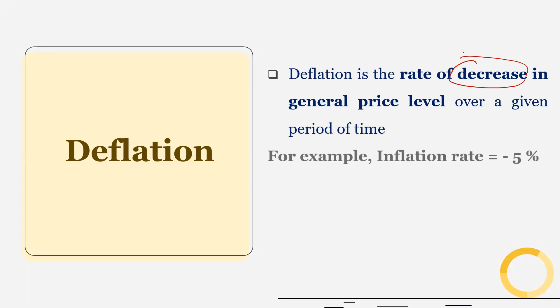So, here, inflation rate is negative. We have minus 5%. So, general price level decreases at 5%. So, in this case, the purchasing power of money or value of money increases. So, with the same amount, now consumers can buy more quantity of goods and services. Because general price level is decreasing in the inflation.